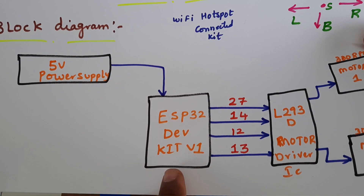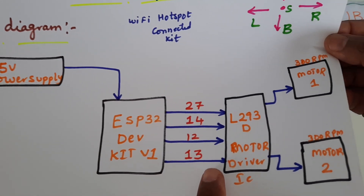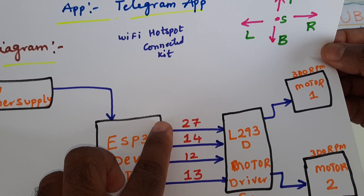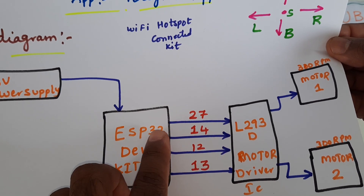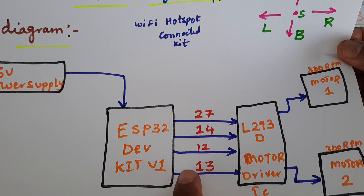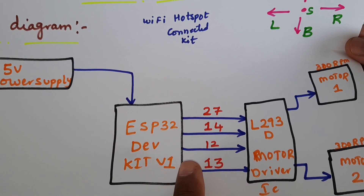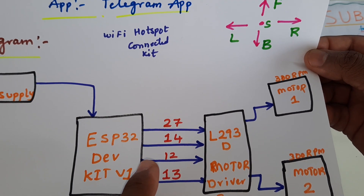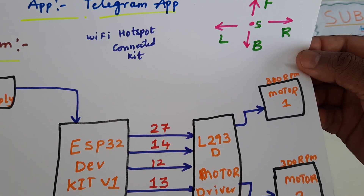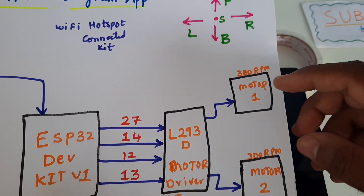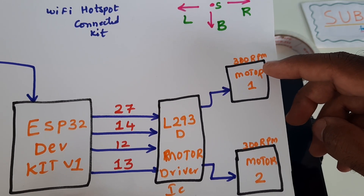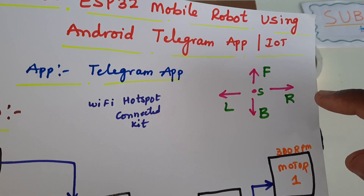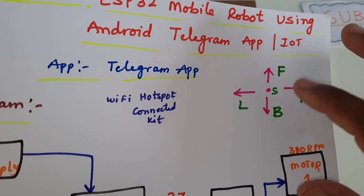We are using the ESP32 development kit version 1 and the L293D driver IC. These are connected with the data lines on GPIO pins 27, 14, 12, and 13 — general purpose input/output pins — which connect to L293D pins 2, 7, 14, 11, and 10. We have two 300 RPM motors: Motor 1 and Motor 2. The supported commands are forward, backward, left, right, and stop.